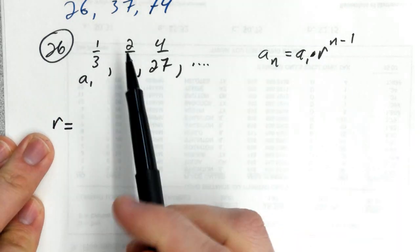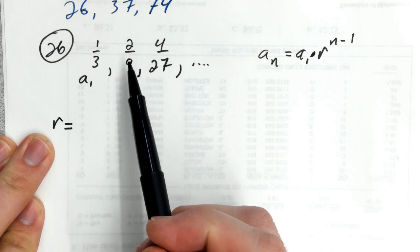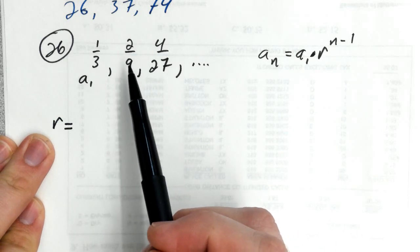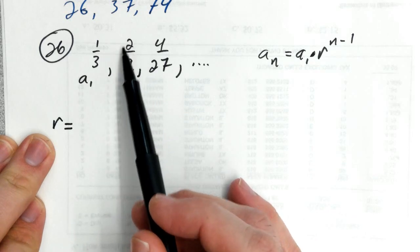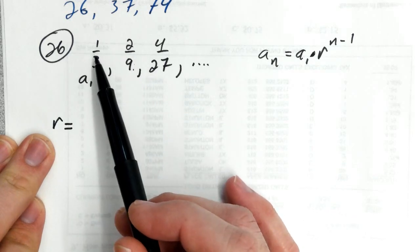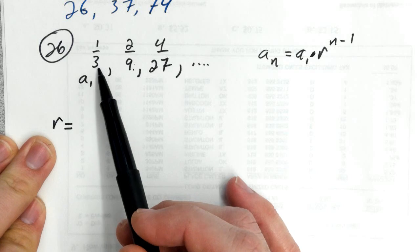The common ratio is just going to be you take any term and divide it by the term before it, and that will tell you what you multiplied by to get the later term. So I can always take the second term divided by the first, and that will give me r.